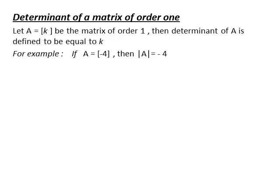Let us discuss the determinant of a matrix of order 1. Let A be a matrix with single element K. Then the determinant of A is also equal to K. For example, if A is a matrix of order 1×1 having element minus 4, then the determinant of matrix A is also equal to minus 4.